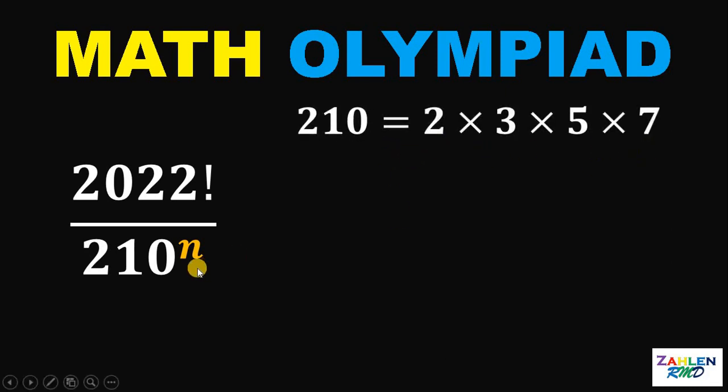Since we want the maximum value of this exponent n, we know in this 2022 factorial there's a lot of 2, there's also a lot of 3 and a lot of 5. So what we're going to do is to focus on the highest exponent of this 7, which is the highest prime factor of this 210.